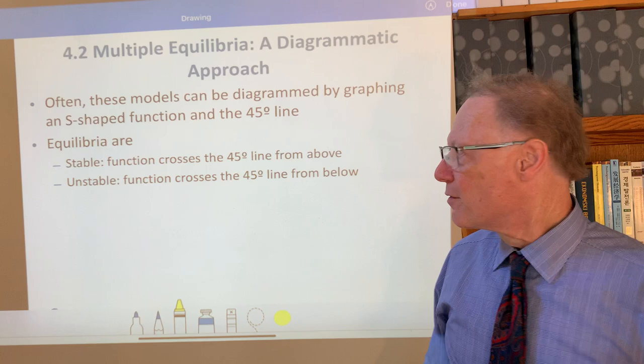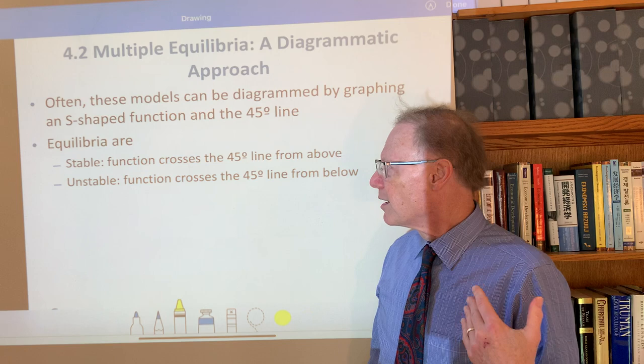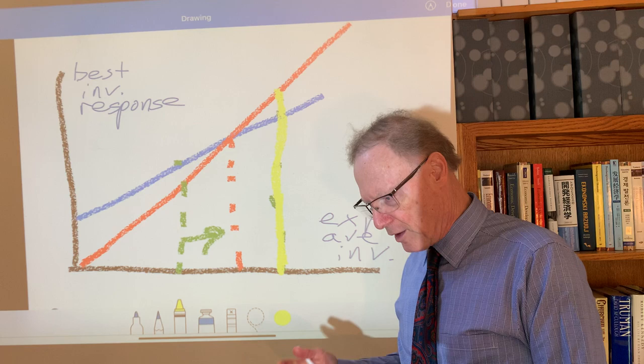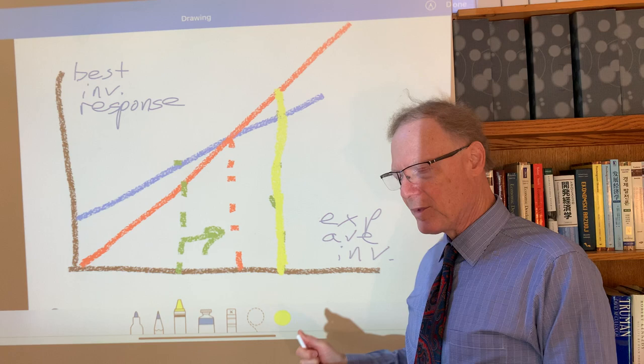But in contrast of these straight line or simple upward sloping reaction functions in which there's one equilibrium, there's a set of cases in which there will be multiple equilibria.